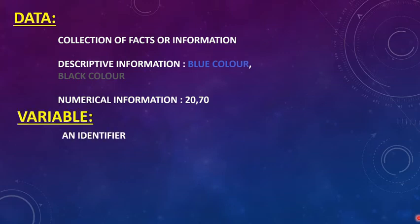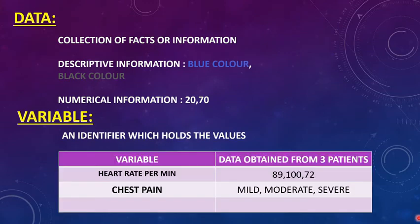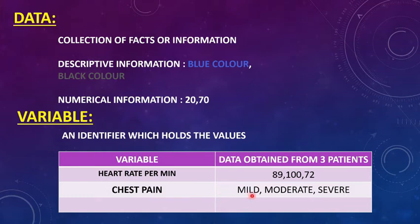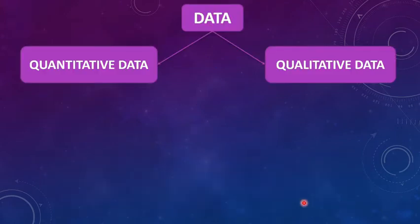The second term we have to be familiar with is a variable. A variable is an identifier which holds values. From the example, you can understand it clearly. The variable 'heartbeat per minute' holds the data of three patients: 89, 100, and 72 — this can be counted in numbers, so it is called numerical information. The variable 'chest pain' holds the data of three patients: mild, severe, and moderate — this gives quality, so it is called qualitative information. Depending upon the information it shows, the data may be quantitative or qualitative.